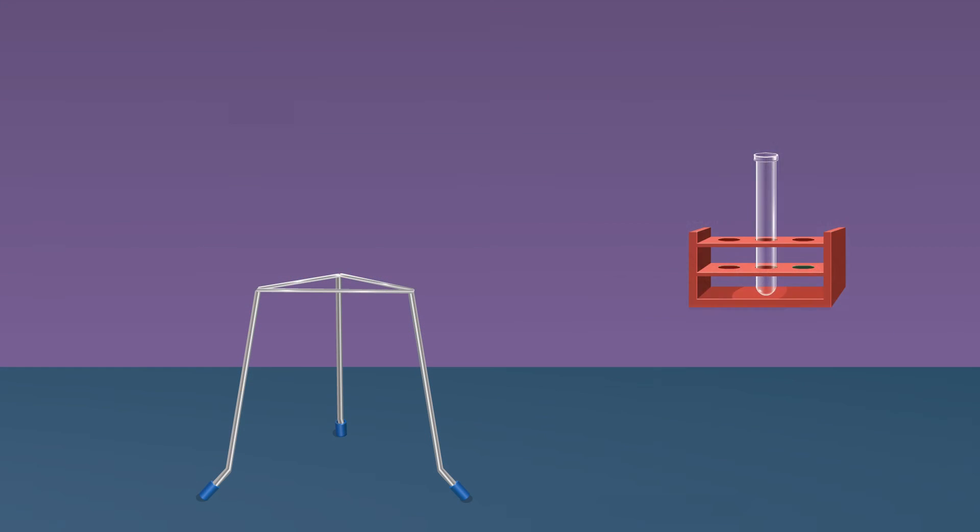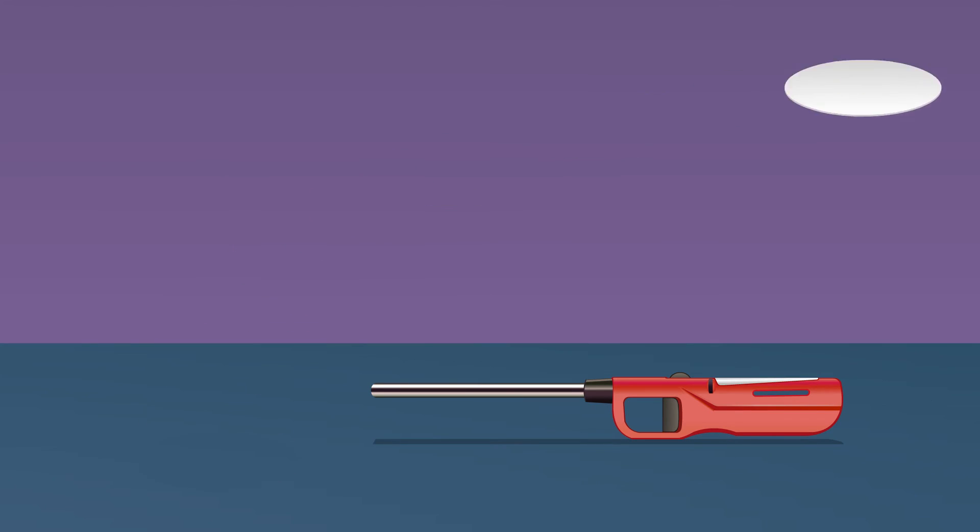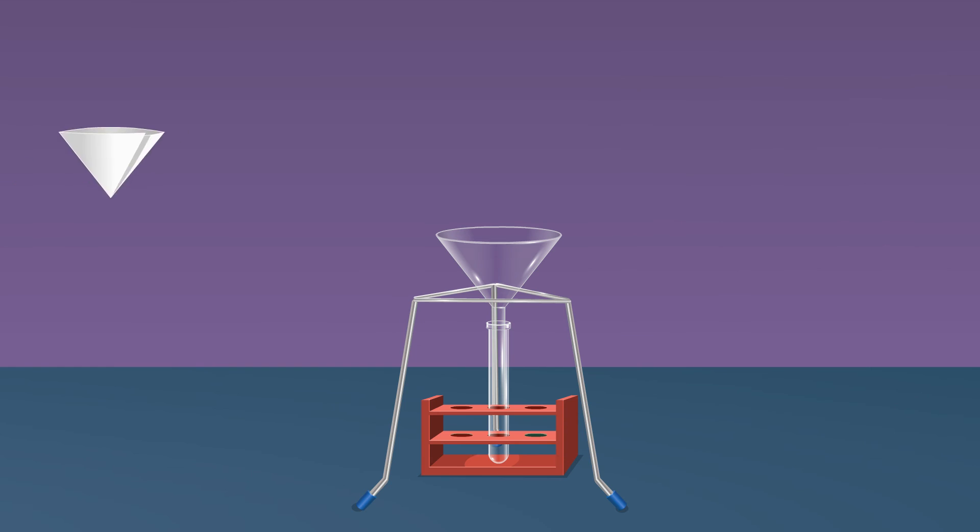Place a boiling tube below the tripod stand and then place a funnel in the tripod stand. Then take the filter paper and fold it as shown and place it inside the funnel. Filter the content in the boiling tube using a filter paper.